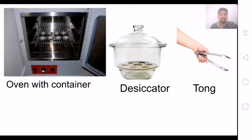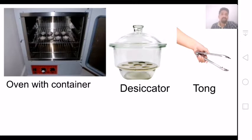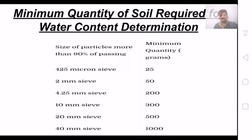Water content determination by oven dry method - we use it in the laboratory. Equipment includes: hot air oven, non-corrodible airtight containers, weight balance, desiccator, and tongs. The oven is set at 110 degrees Celsius, plus or minus 5 degrees Celsius. We put the soil in for 24 hours, then remove the soil and the water container. We then put the soil in a desiccator to remove humidity.